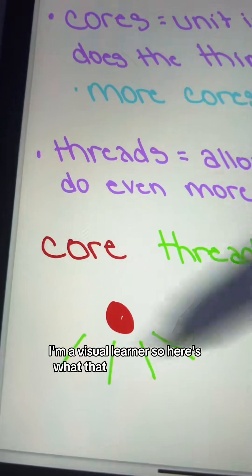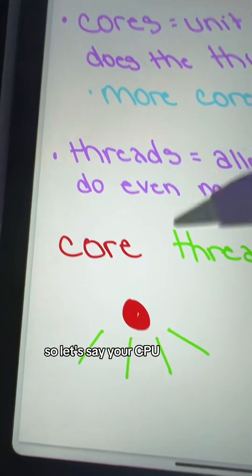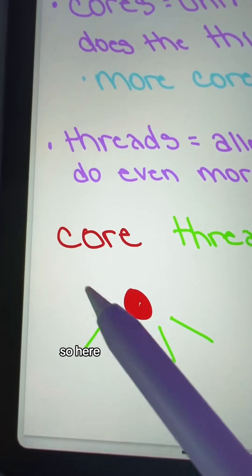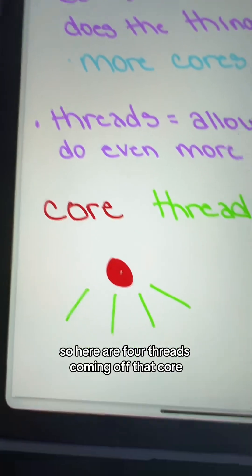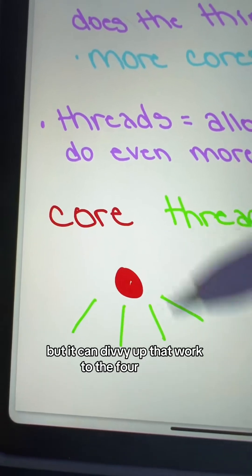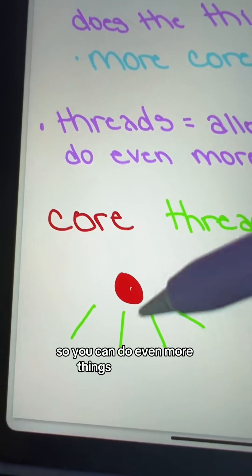I'm a visual learner, so here's what that sort of looks like. So let's say your CPU has one core. So here's our one core and it has four threads. So here are four threads coming off that core. So your core by itself is doing stuff, but it can divvy up that work to the four cores, so you can do even more things at one time.